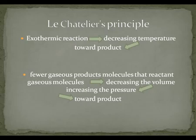The two important concepts of this principle applied to ammonia production are the following. First, in an exothermic reaction, decreasing the temperature would result in the equilibrium shifting toward the product. And the second concept, when there are fewer gas product molecules than reactant gas molecules, increasing the pressure would force the equilibrium to shift toward the product.